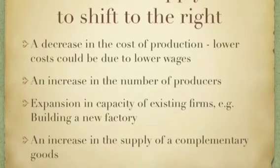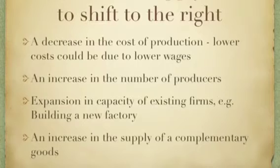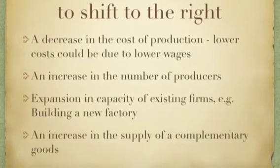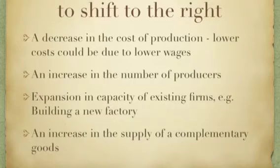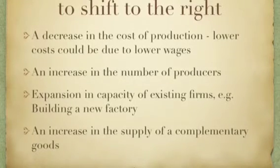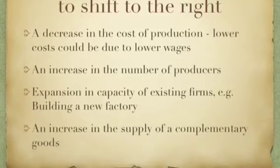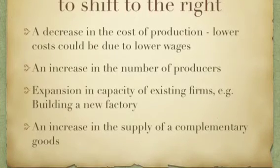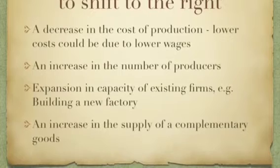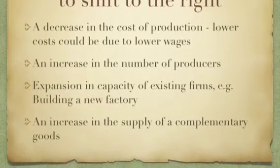Another reason why supply can increase is due to an increase in supply of a complementary good. As you should already know, a complementary good is basically something that goes well with another good — for example strawberries and cream. So if there is an increase in supply of strawberries this will ultimately lead to an increase in supply of cream.